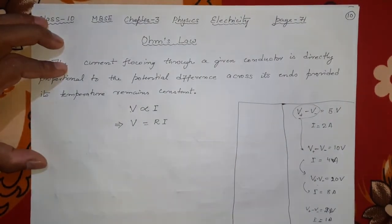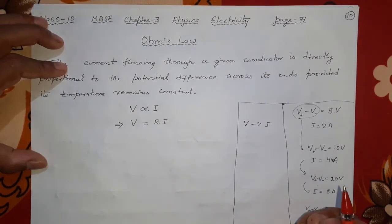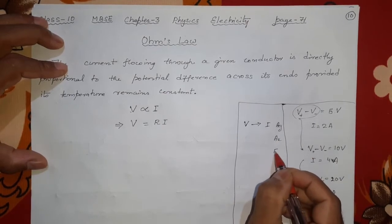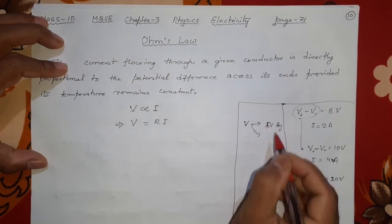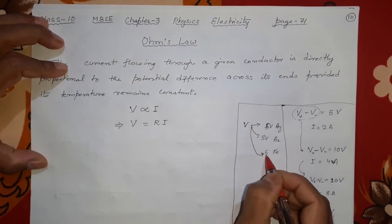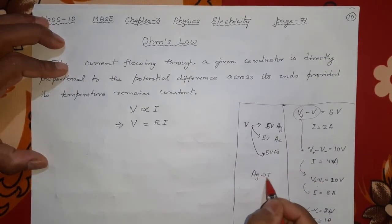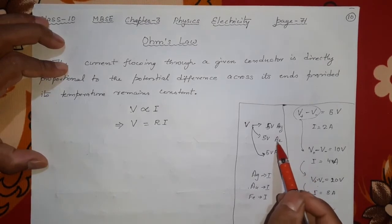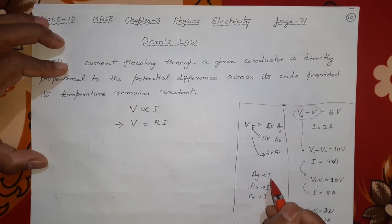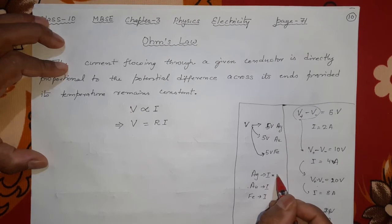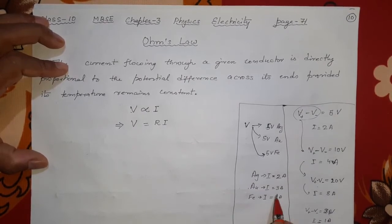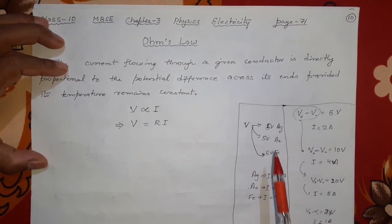Let me explain. Voltage decides the current — fine. But suppose this conductor is silver, this is gold, this is iron. I give 5 volts to each. Remember the chemical symbols: silver Ag, gold Au, iron Fe. Will they give me the same current? No. Maybe silver gives 2 ampere, gold gives 3 ampere, iron gives 4 ampere. Same voltage, different current — why? Because the material is different.